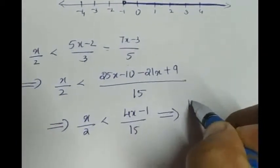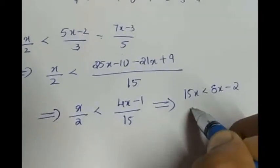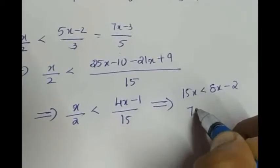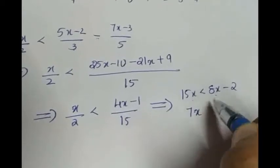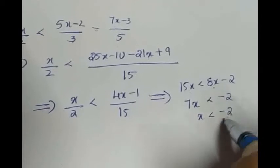If I cross multiply, 15x less than 8x minus 2. Collecting x terms to one side, 15x minus 8x gives you 7x less than minus 2. That means x less than minus 2 by 7.